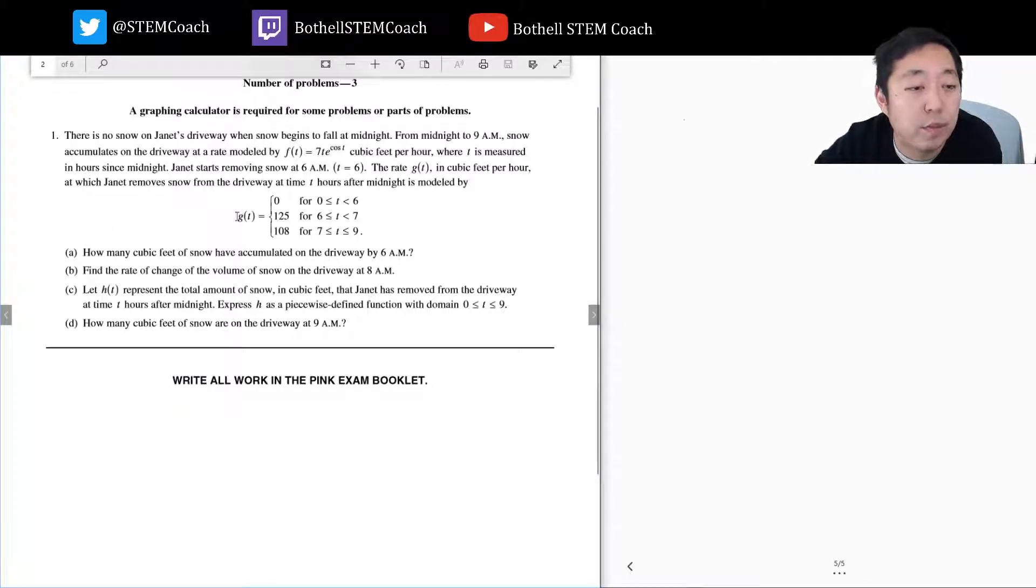Janet starts removing snow at 6 a.m. The rate g(t) in cubic feet per hour when Janet removes the snow from the driveway is given by this. So this is the rate - she's at zero here because she's sleeping between midnight and 6 a.m. At 6 a.m., which is t equals 6, she removes it for an hour, then the next two hours she kind of slows down a little bit. How many cubic feet of snow accumulated in the driveway by 6 a.m.?